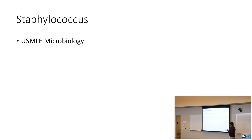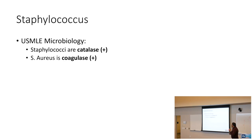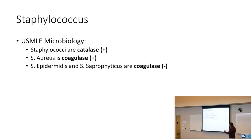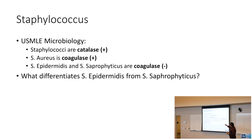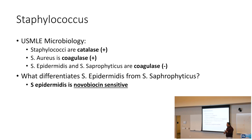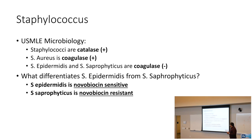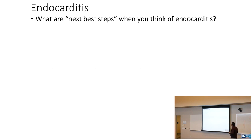For USMLE microbiology: staphylococci are catalase positive. Staph aureus is coagulase positive, while staph epidermidis and staph saprophyticus are coagulase negative. What differentiates them is that staph epidermidis is novobiocin sensitive, whereas staph saprophyticus is novobiocin resistant.